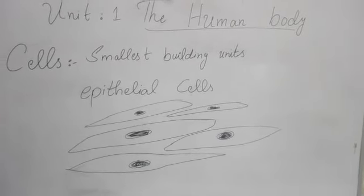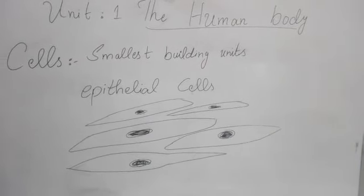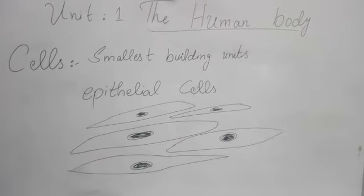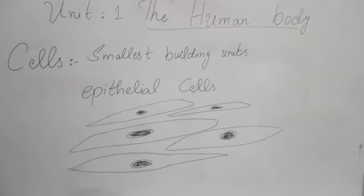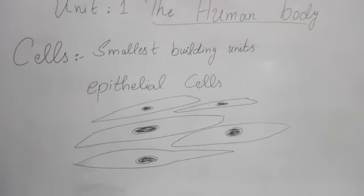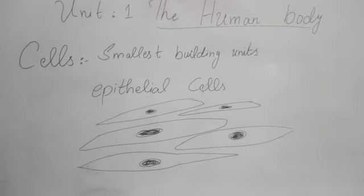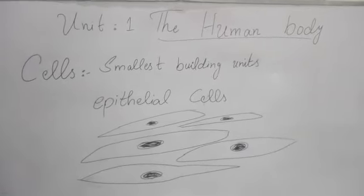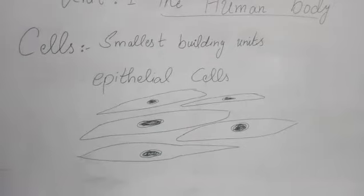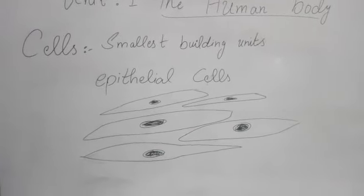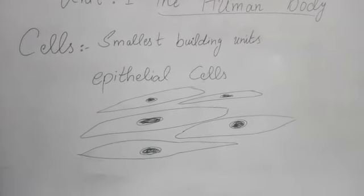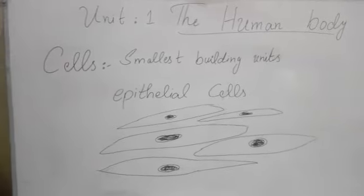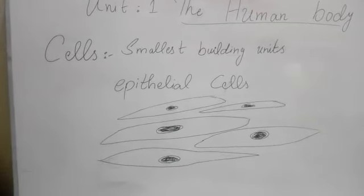Next, we have epithelial cells. Epithelial cells are skin cells. These are dead cells. We shed them from our body. Approximately, we shed about 5–6 kg of dead epithelial cells in one layer.